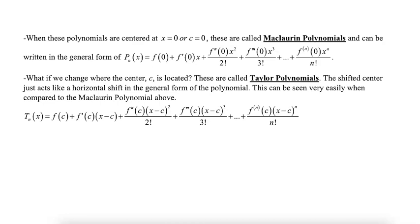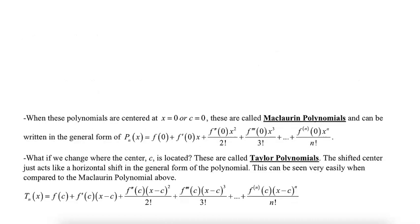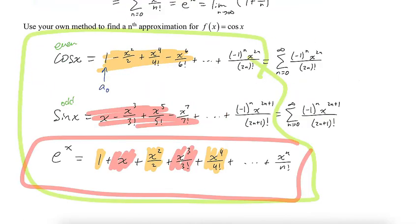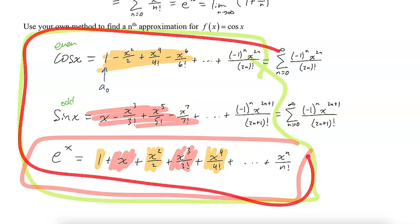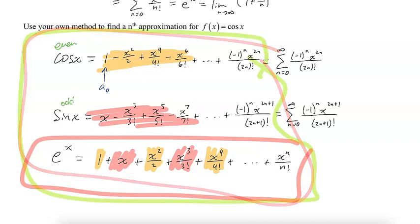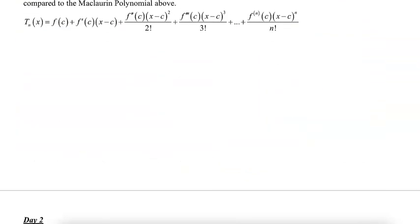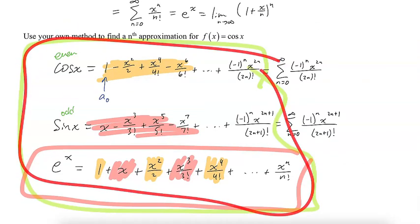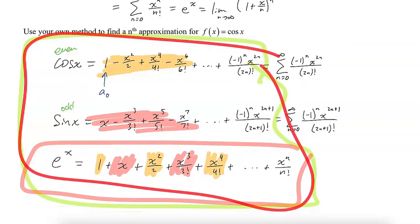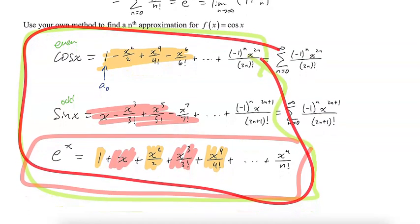You may want to pause the video here. The key things to memorize are the Taylor polynomial formula, the general form of the polynomial, and the three series for cos x, sin x, and e^x. I'll show you how we're going to use this in just one second.